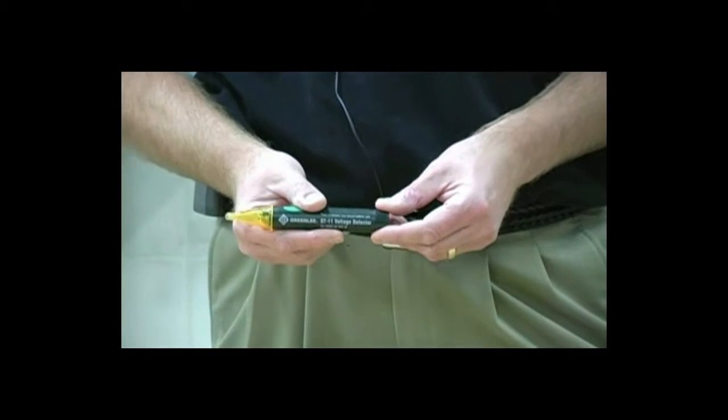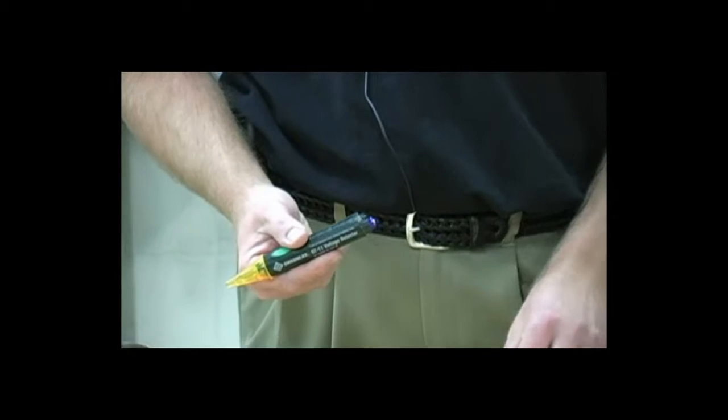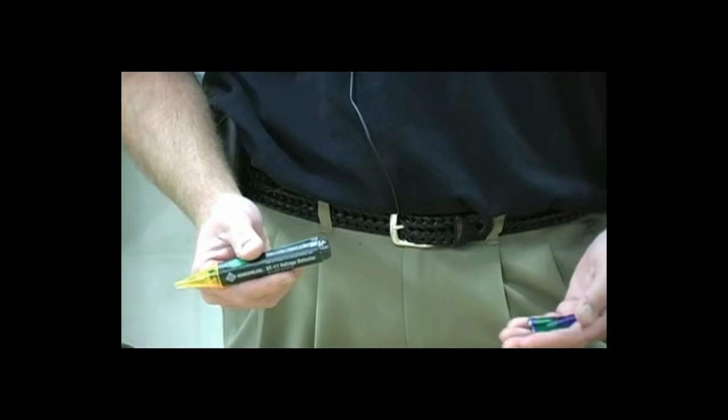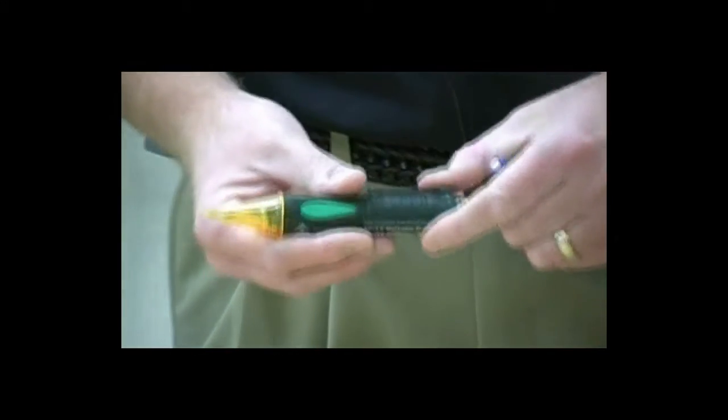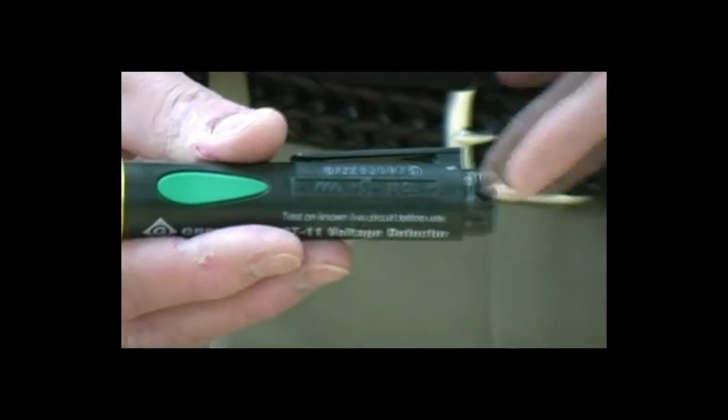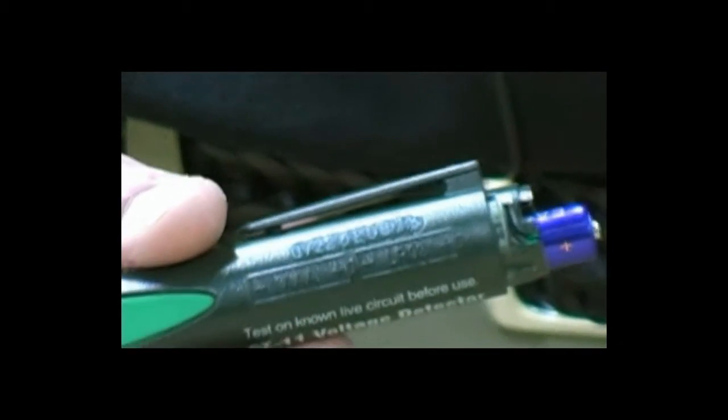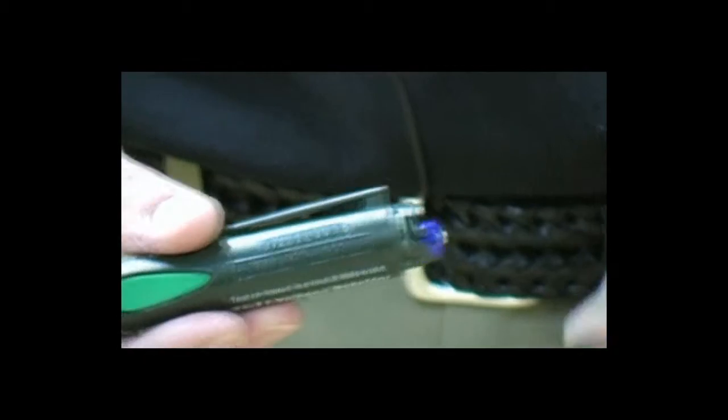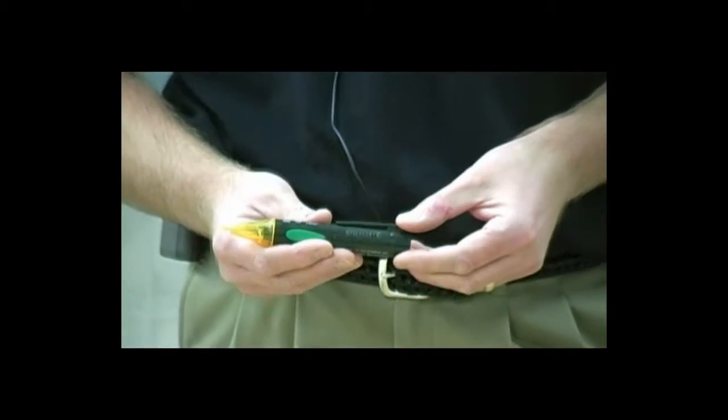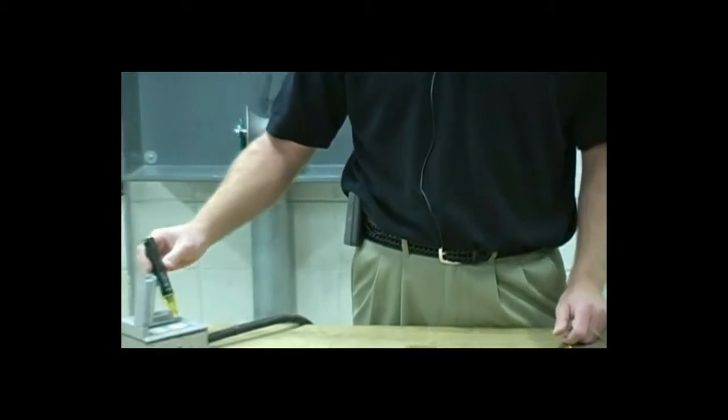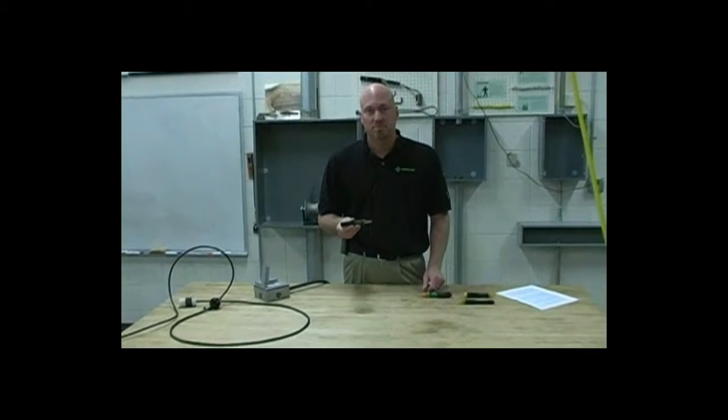To change the batteries in the GT11, simply turn the cap in the opposite direction you would to turn it on about an eighth of a turn. The cap will come off, remove the batteries, replace with new AA alkalines. There is a battery diagram on the side of the tool to ensure that you line up the polarity of the batteries properly. Reinstall the batteries, pop the top back on, turn the unit on, and test on a known live circuit. Now you're ready to go.